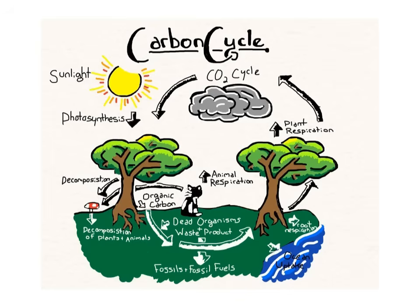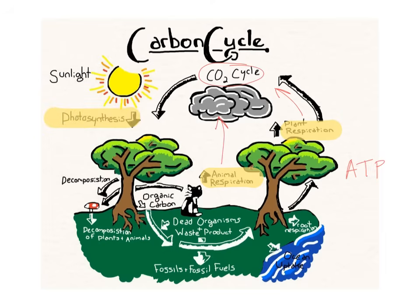Now let's one more time review how photosynthesis and respiration relate to the carbon cycle. The whole purpose of respiration is to make ATP — the energy. To do that, it uses glucose and as a byproduct releases CO2. The whole purpose of photosynthesis is to make glucose, which can then be used to eventually make ATP. When making glucose, the plant needs to take CO2 out of the air and use it as a reactant to build that glucose molecule.